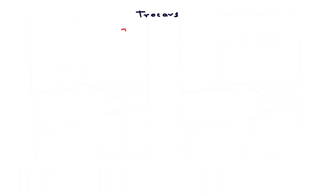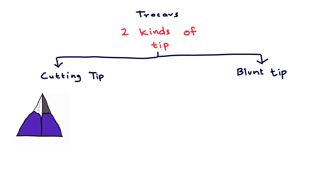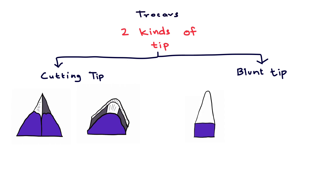Trocars have basically two kinds of tip: cutting tip and blunt tip. The cutting tip can be of various types, like the pyramidal tip, which has sharp edges on two planes, and the bladed tip, which has sharp edges on one plane. Blunt tip trocars are also of various types — for example, the blunt conical tip trocar and the normal blunt tip trocar. Trocars with a cutting tip penetrate the abdominal wall more readily compared to trocars with a blunt tip.